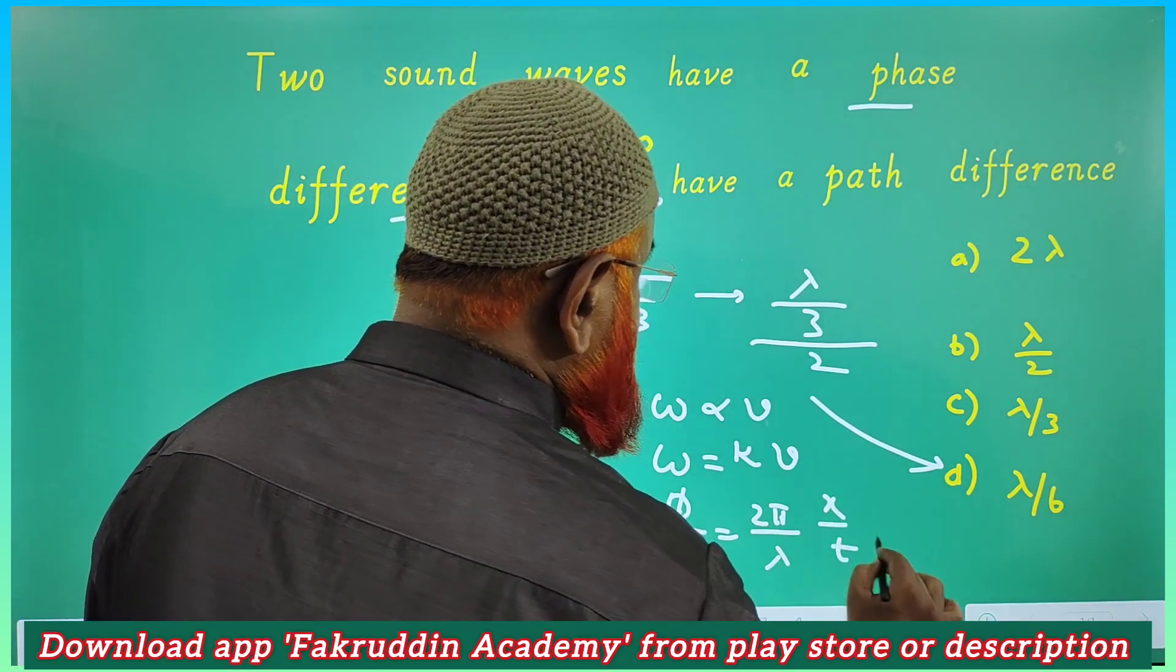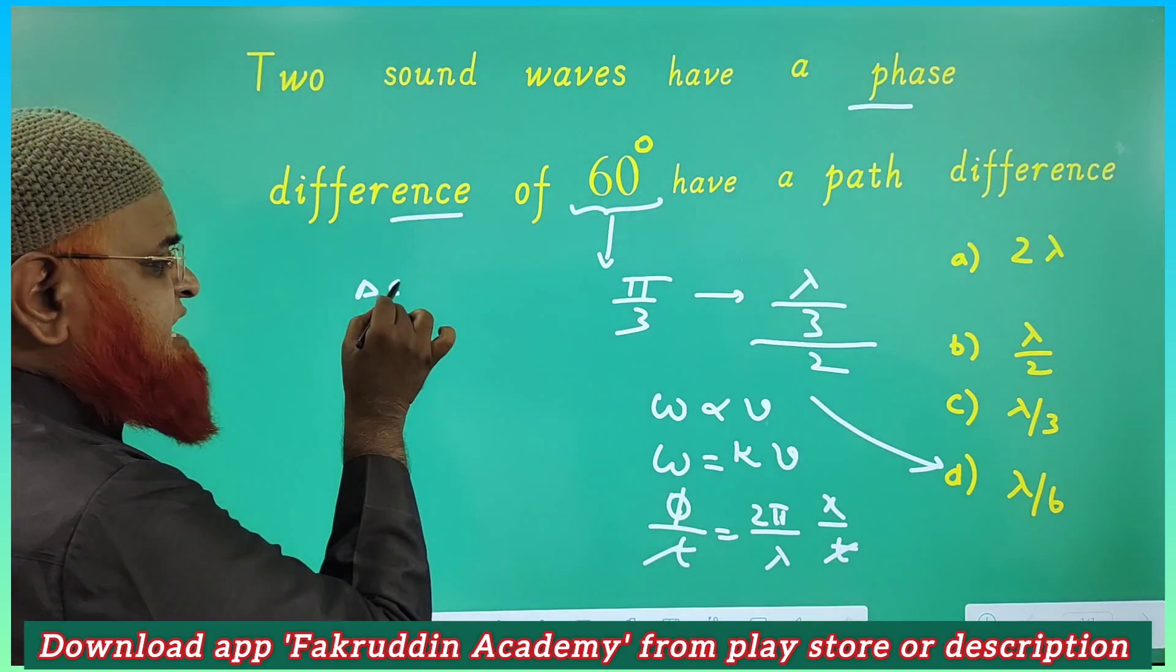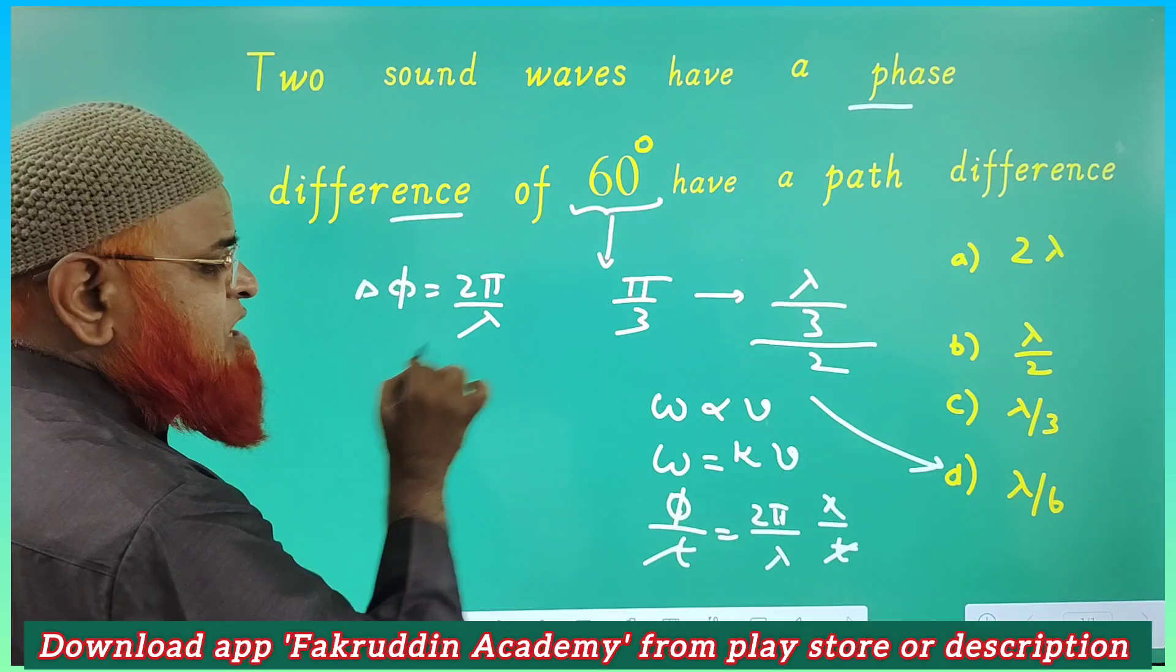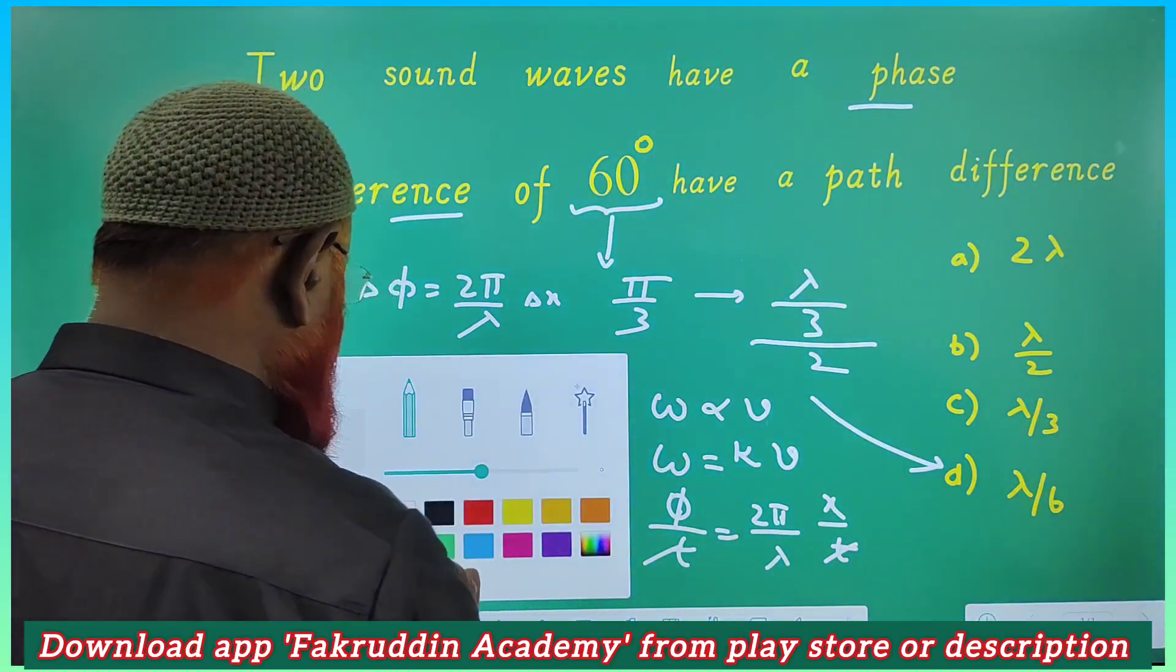So time gets cancelled - what are we going to get now? Change in path is equal to 2π by λ times change in phase. This is the relation you are getting now.